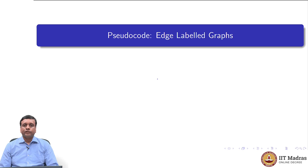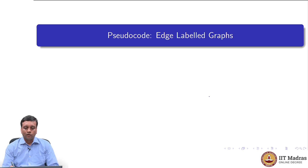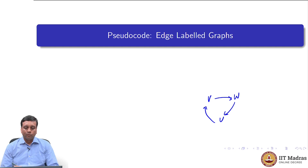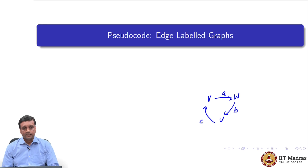We have seen that a graph consists of a set of nodes connected by a set of edges. When we draw a graph, we typically draw nodes and edges with arrows indicating what is connected to what. We can do one more step of information gathering by putting labels which carry meanings on these edges. What we are going to look at in this session is what we call an edge labeled graph.